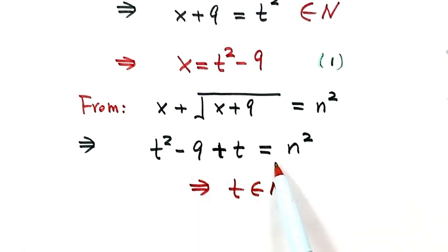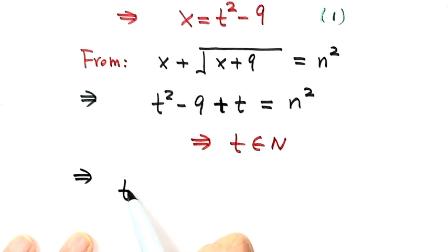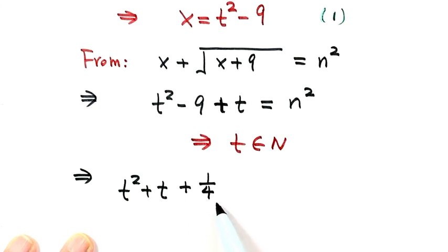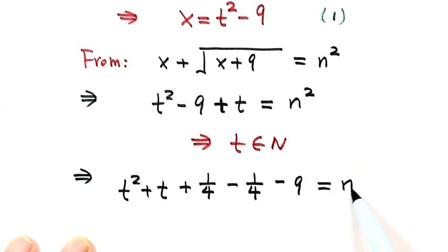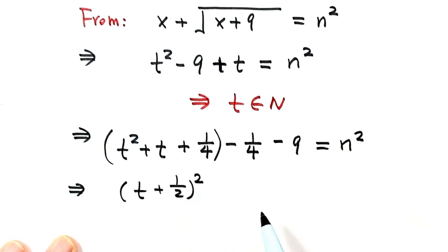Now let's solve this equation. We have one equation with two variables. Let's combine t squared with t: t squared plus t. To form a complete square, we add 1 over 4 and subtract 1 over 4, then subtract 9, all equaling n squared. Combining the first three terms gives the perfect square t plus one-half, all squared, minus 37 over 4, equals n squared.